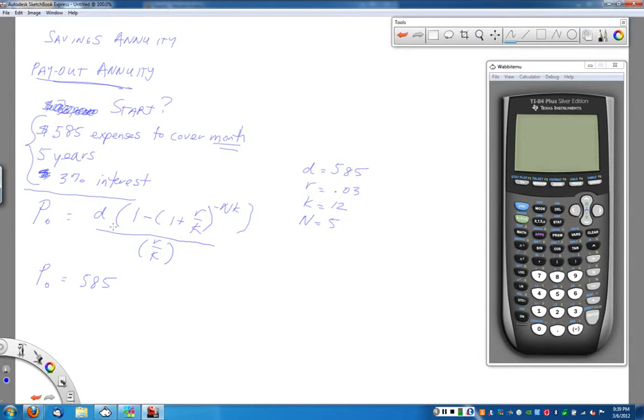So d is 585 times (1 minus (1 plus r is 0.03 divided by k is 12) to the negative 5 times 12 power, and again it's a good idea to put that in parenthesis for your exponents to keep you out of some trouble on your calculator, and then all divided by (r divided by k, so that 0.03 divided by 12 again).